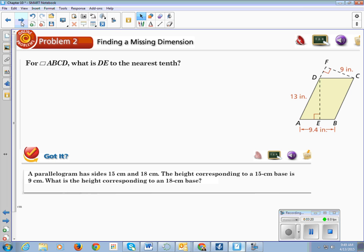Alright, so now we're on problem number 2, finding a missing dimension. This is where, finding the area of a parallelogram is extremely easy. But for some reason, they've added this different dimension into it. So for parallelogram ABCD, what is DE, which is the height, to the nearest tenth? So what we're going to do is we are going to shift this guy on its side.